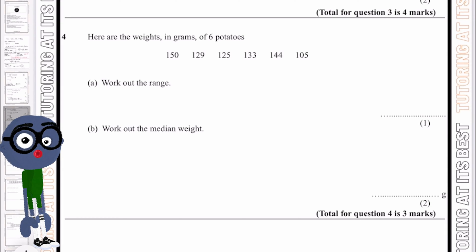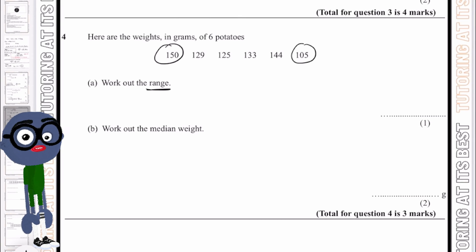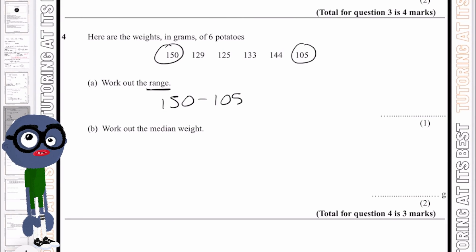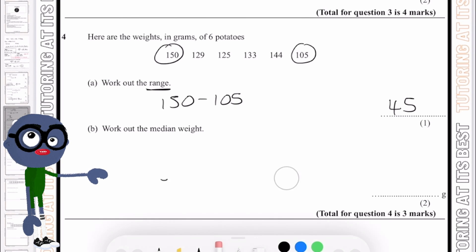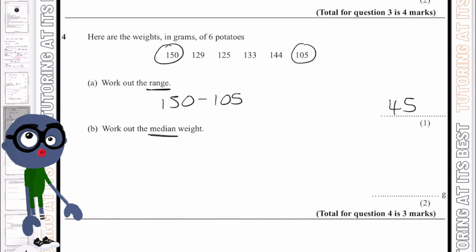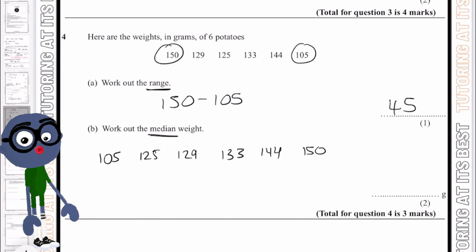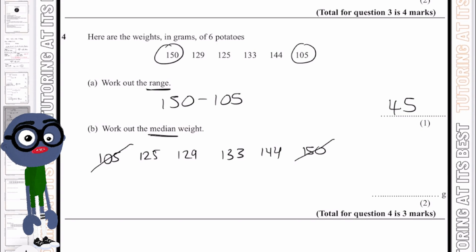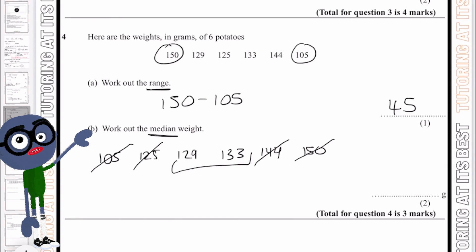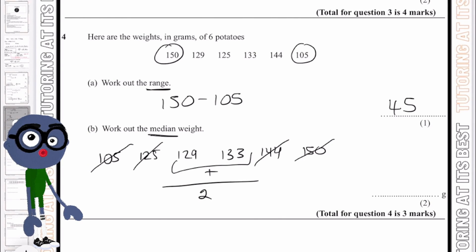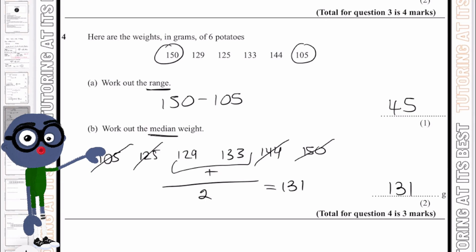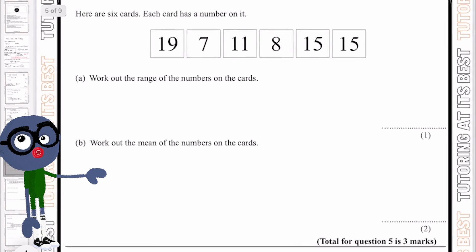Question four: the range is 150 take away 105, which gives us 45. For the median, I'll write out the numbers in order and cross from each end — crossing 105 and 150, then 125 and 144 — we're left with two values. We add them and divide by 2, giving us 131 grams as the median.